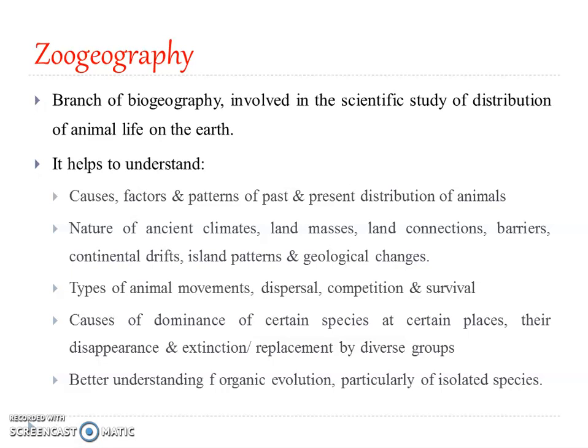We can also understand the types of animal movement, dispersal, competition, and survival. It also helps to understand the causes of dominance of certain species at certain places, their subsequent disappearance and extinction, and finally replacement by diverse groups. Above all, a better understanding of the process of organic evolution, particularly of isolated species — those found only in a specific area and nowhere else — can be understood. This is the scope of zoogeography.